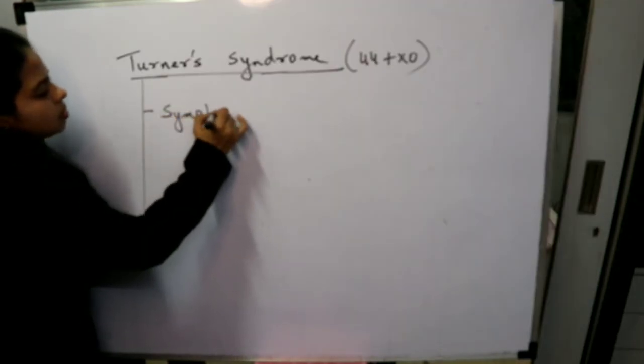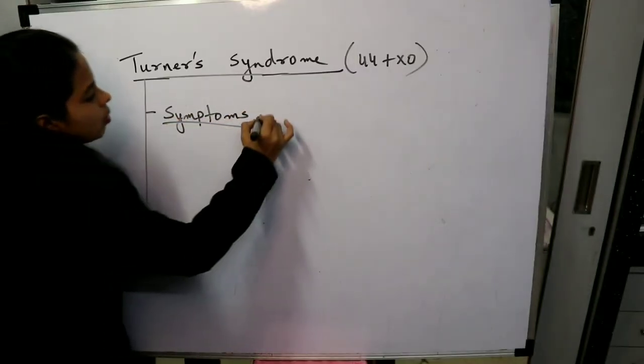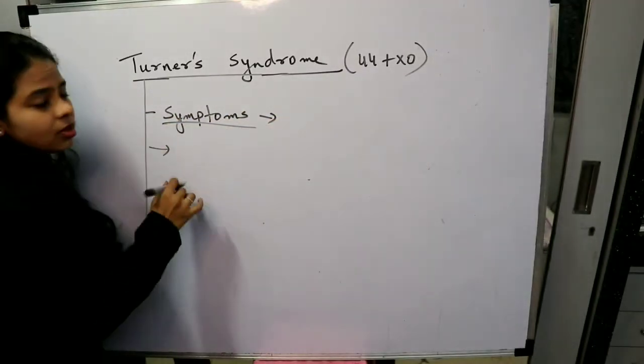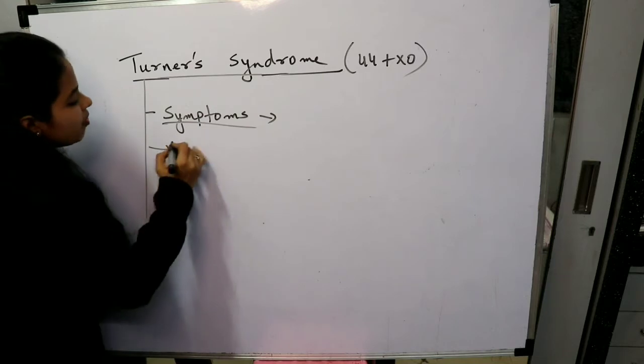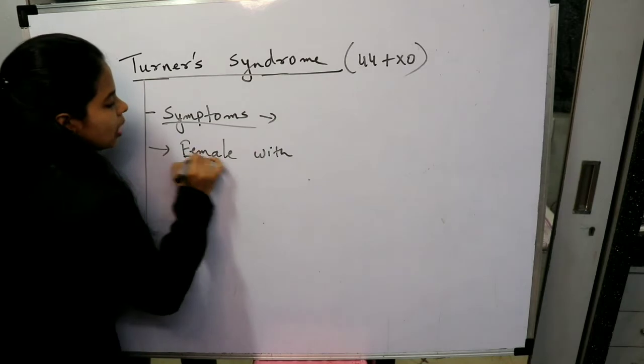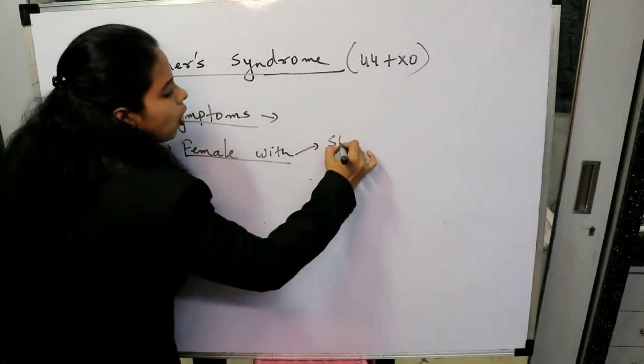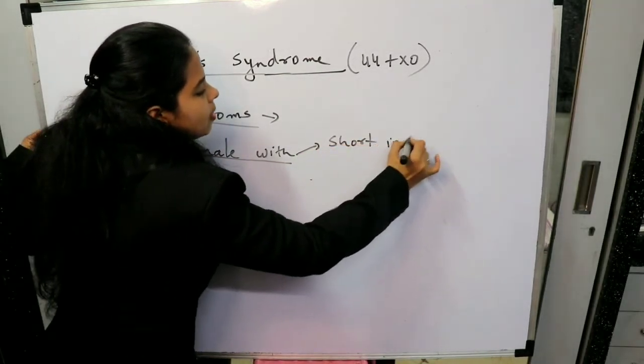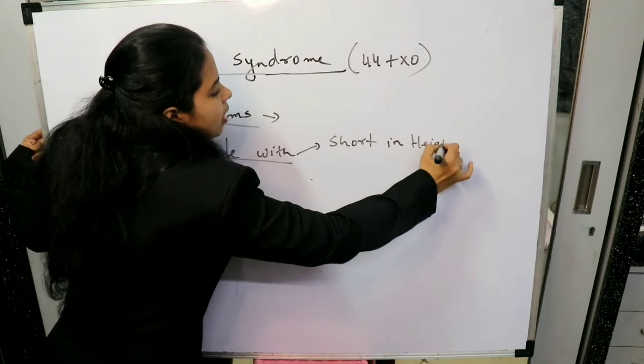So symptoms - first, this individual is phenotypically a female. Now this female is short in height.